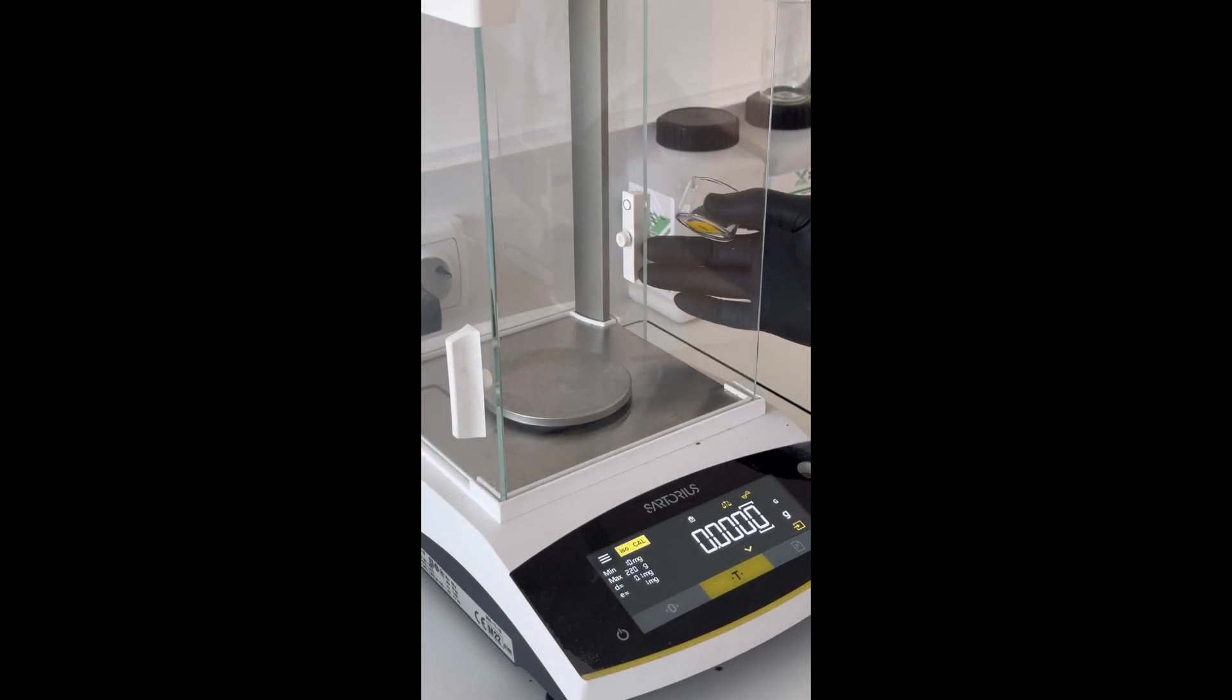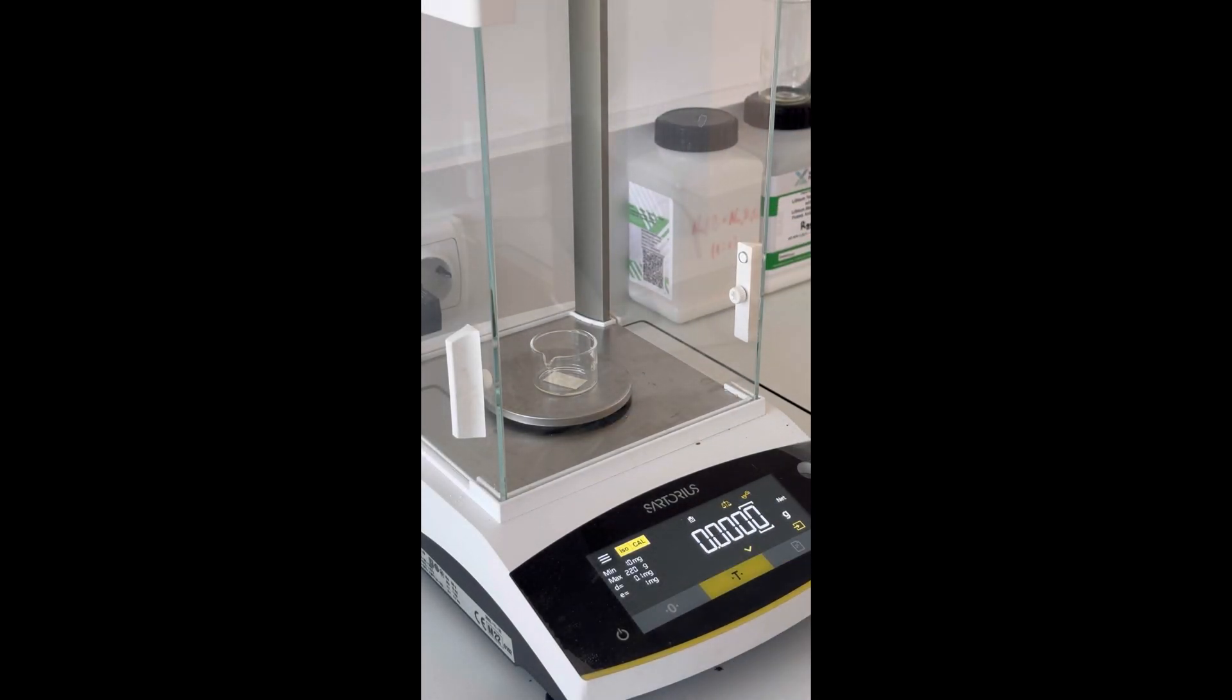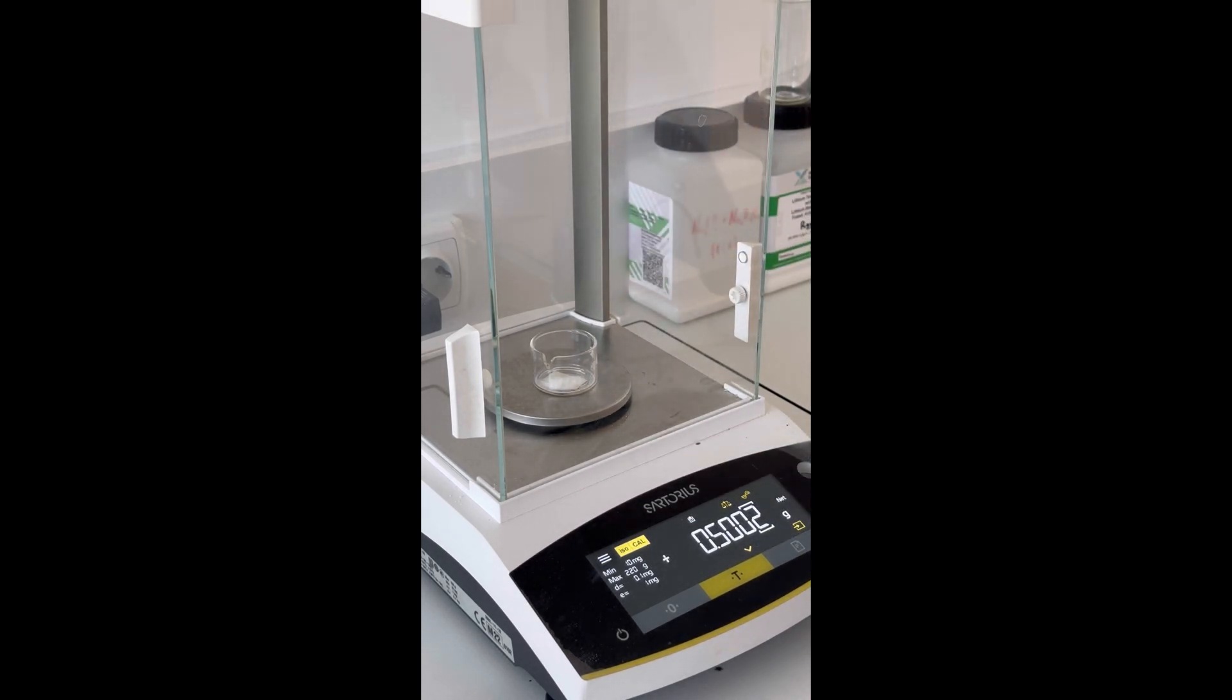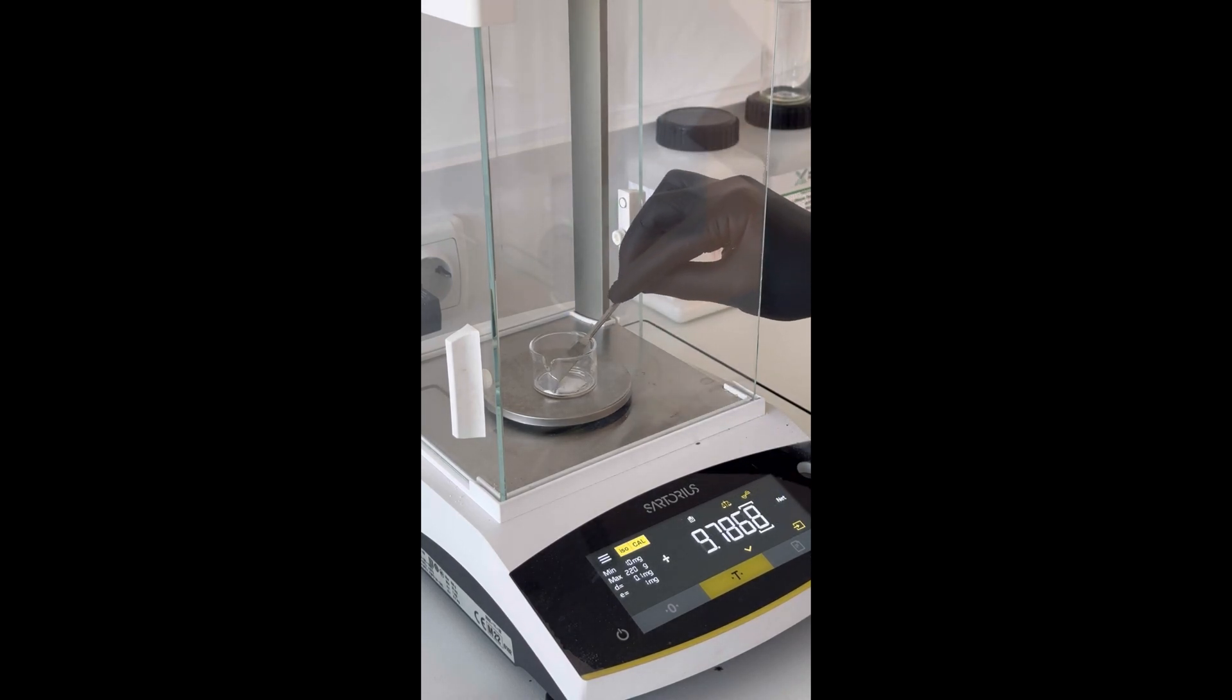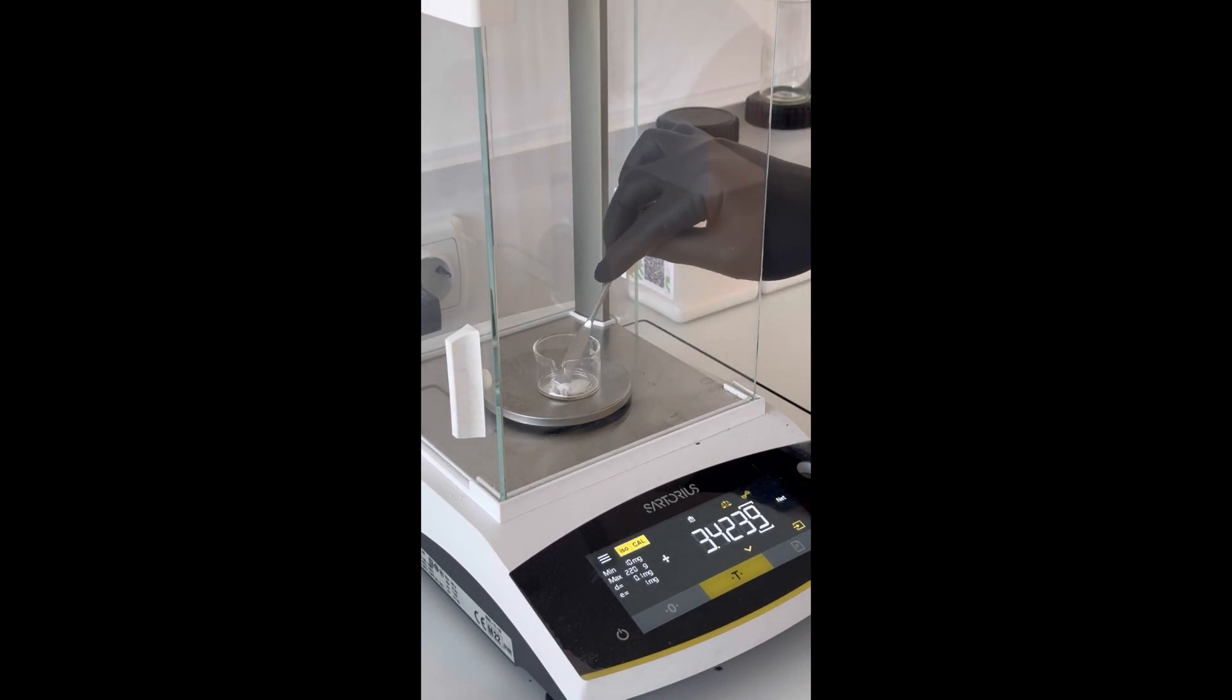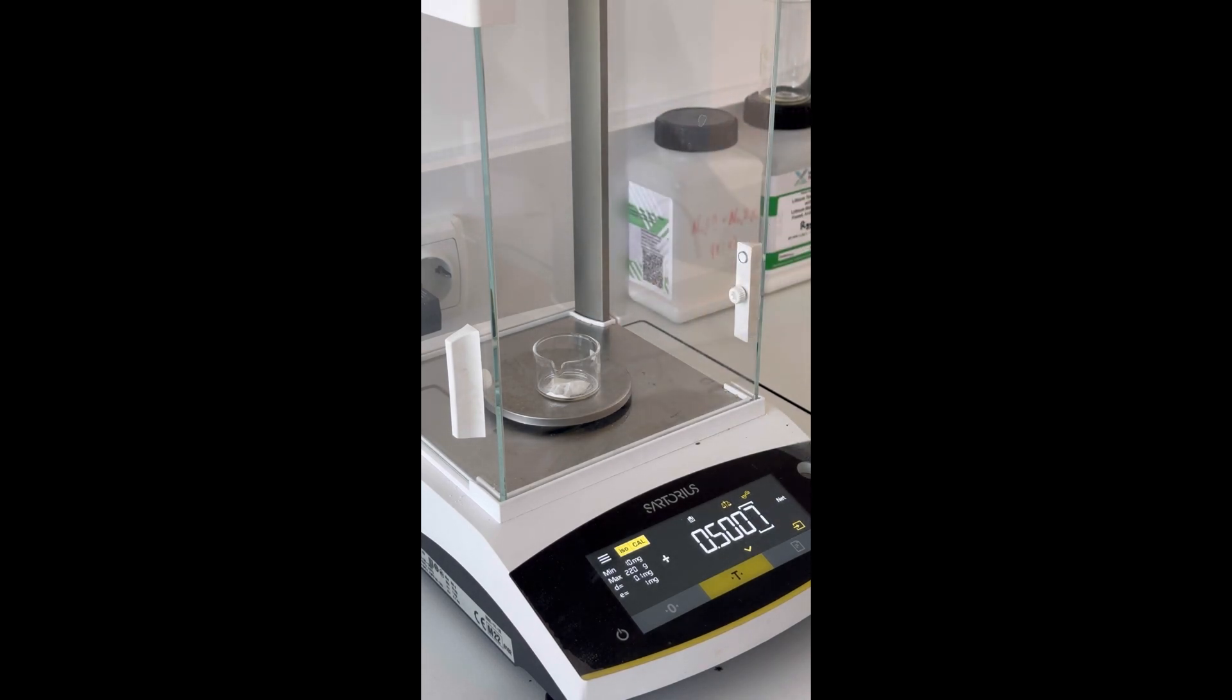For determination of the exact concentration of the solution, we weigh 0.5004 grams of dried calcium carbonate. It is important to be as precise as possible, allowing not more than 0.0001 grams of deviation.